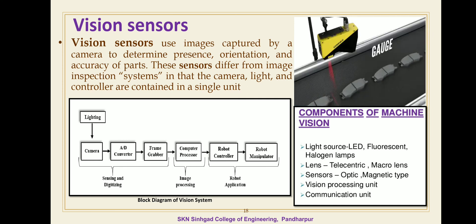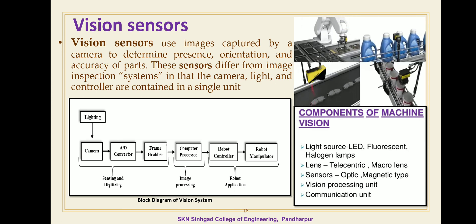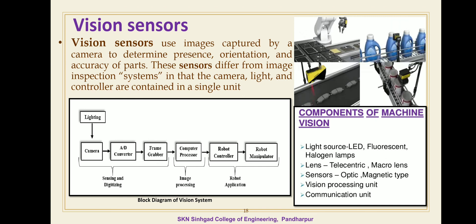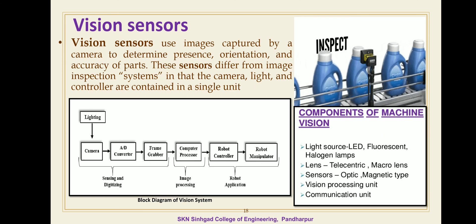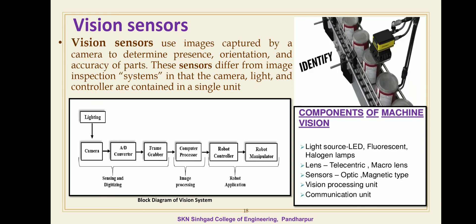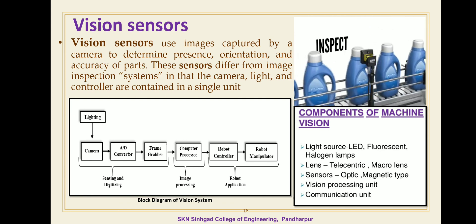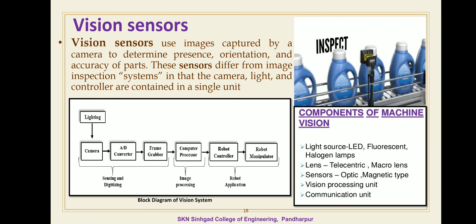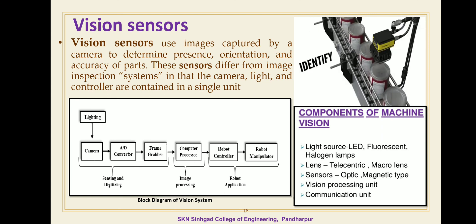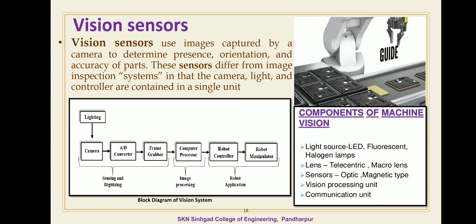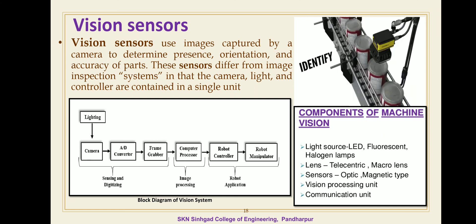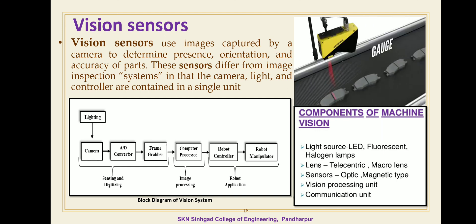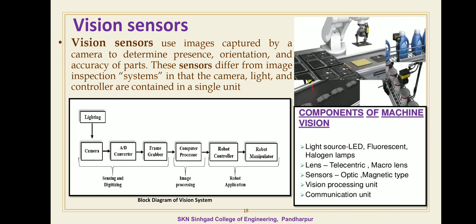The next step is image processing and analysis. The digitized image is subject to image processing and analysis for data reduction and interpretation. Image analysis consists of four parts: pre-processing (dealing with noise reduction), segmentation (which partitions an image into objects), description (which computes various features like size and shape), and recognition (which identifies the different objects). These are the different concepts related to vision sensors.